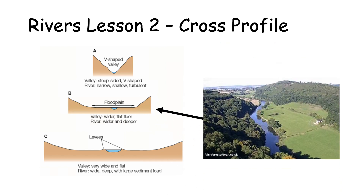Diagram B — now we're looking at the middle course. You can see from the picture that at the sides it's still slightly hilly, but we've now started to get an area of flat land in between. This area of flat land is what we call the floodplain, and we'll see this gets bigger when we get down to the lower course. It's still got some hills at the sides, but it starts to get more flat land as well, and the river also starts to get wider and a little bit deeper.